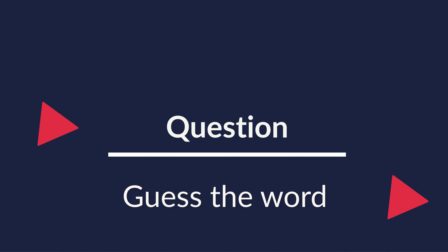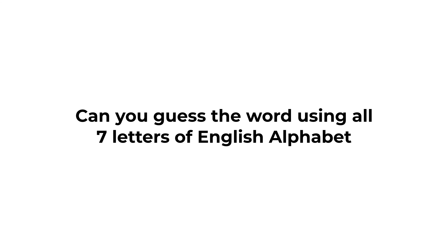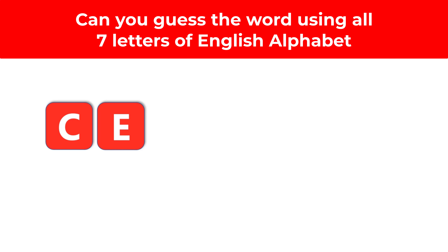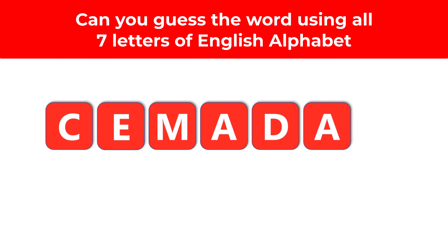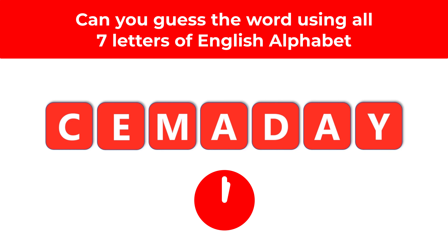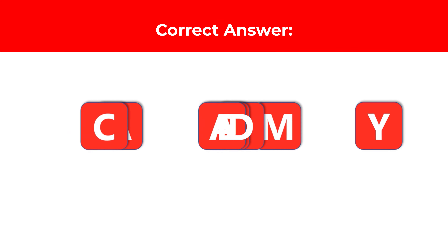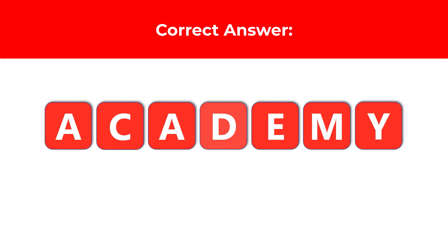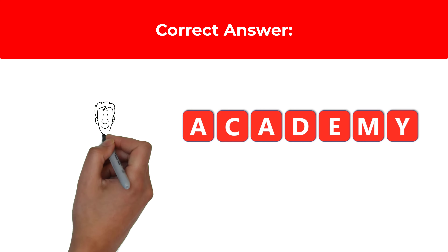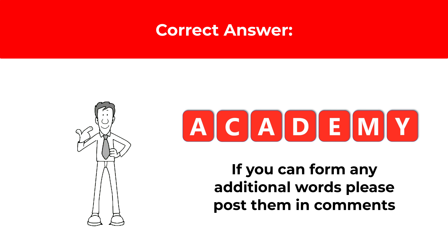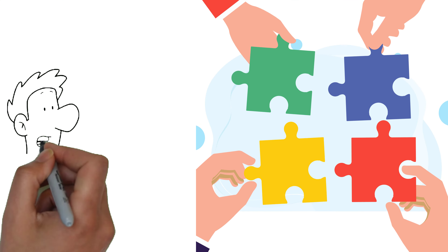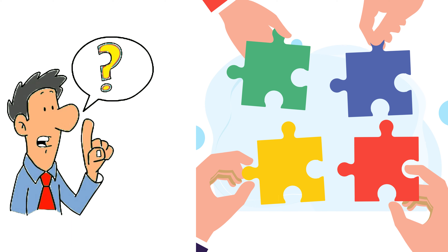Here's another tricky problem we frequently see on the test. You're presented with seven letters: C, E, M, A, D, A, and Y — guess the word using all the letters. Give yourself 15 to 20 seconds. The correct answer is 'academy,' spelled A-C-A-D-E-M-Y. If you can think of other words meeting the criteria, post them in the comments. To improve at word puzzles, try crosswords and the Scrabble game.